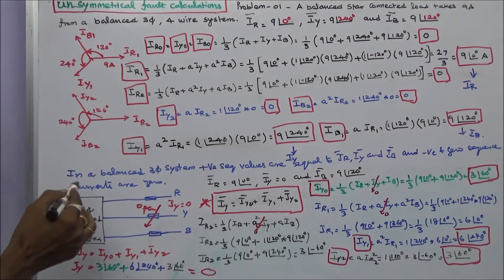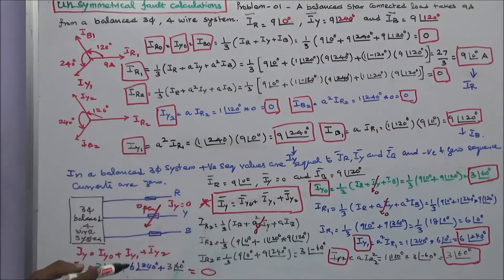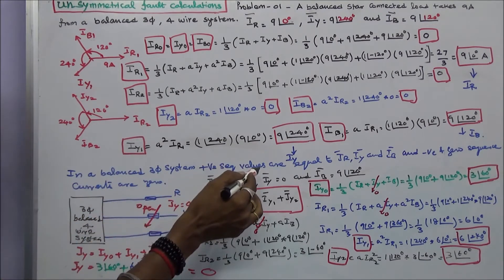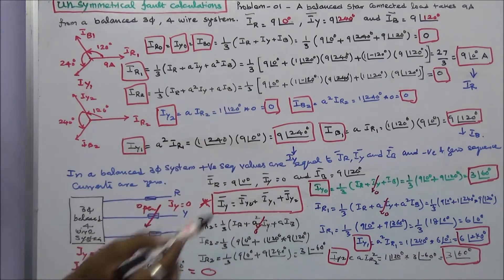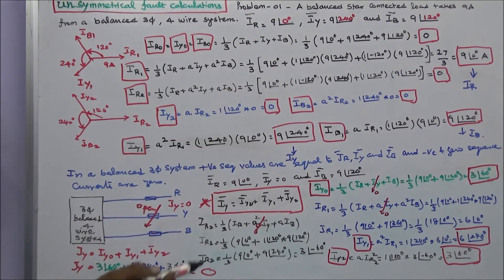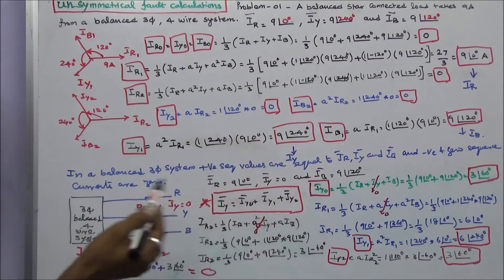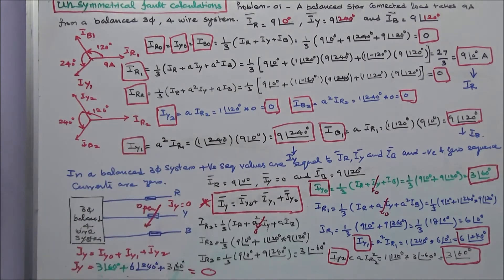In a balanced three-phase system, positive sequence values are equal to IR, IY, and IB. Negative and zero sequence currents are zero in a balanced three-phase four-wire system.